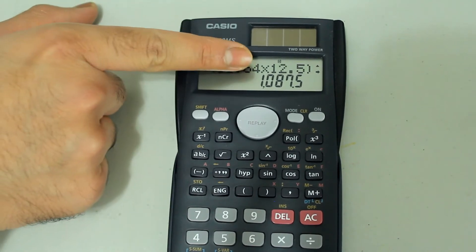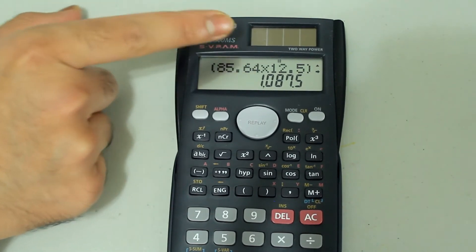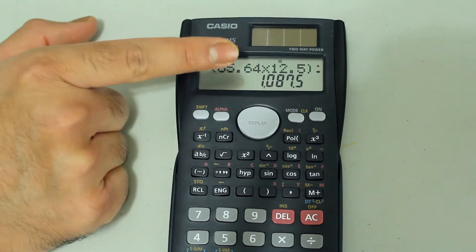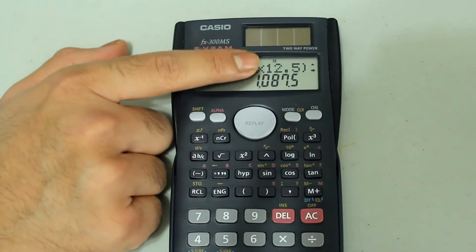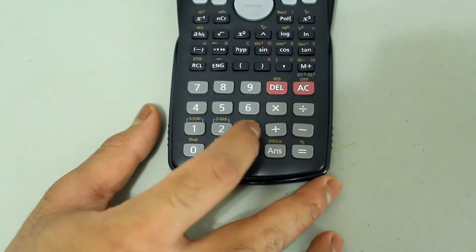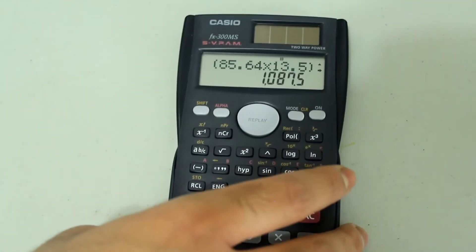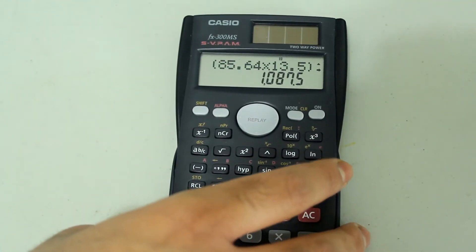I want to change the 2 to a 3. So once the cursor is blinking on the 2, I'm going to just press 3. And now you can see that it has become 13.5.